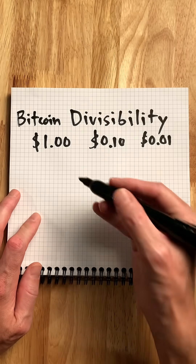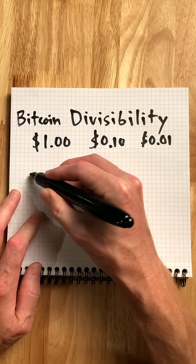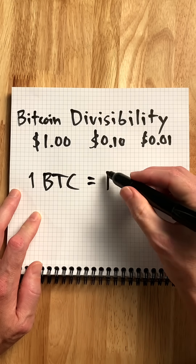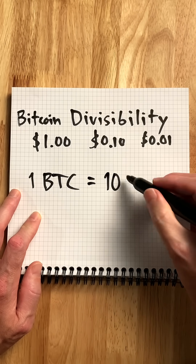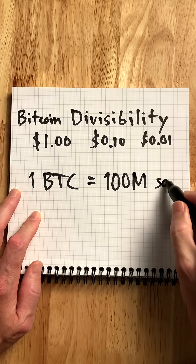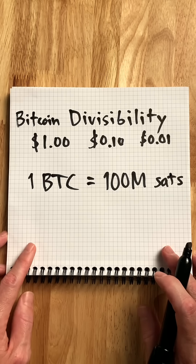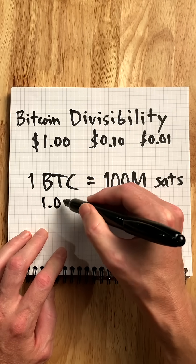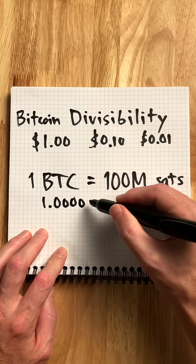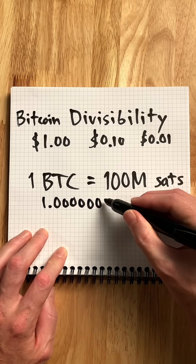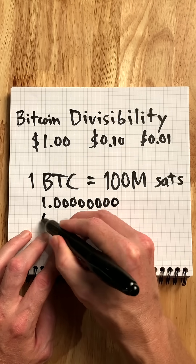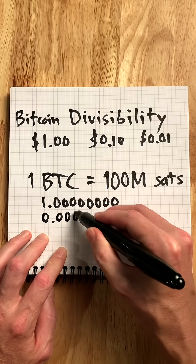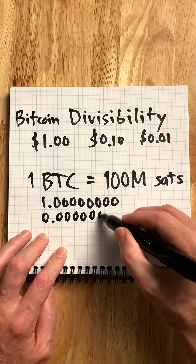Bitcoin is highly divisible. One Bitcoin equals 100 million Satoshis, or Sats. If we look at this visually, one Bitcoin has eight zeros behind it, and a Satoshi has seven zeros with a one.